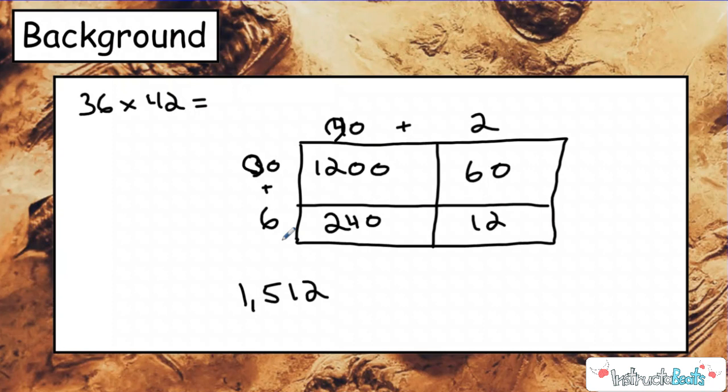And this was kind of a nice fun math way to break apart our array, but then we had to add all the partial products back together. And when we add all these back together, we get a product of 1,512. So hopefully that's just the background knowledge, the fossil bone structure of the dinosaur that we're building today in our heads.